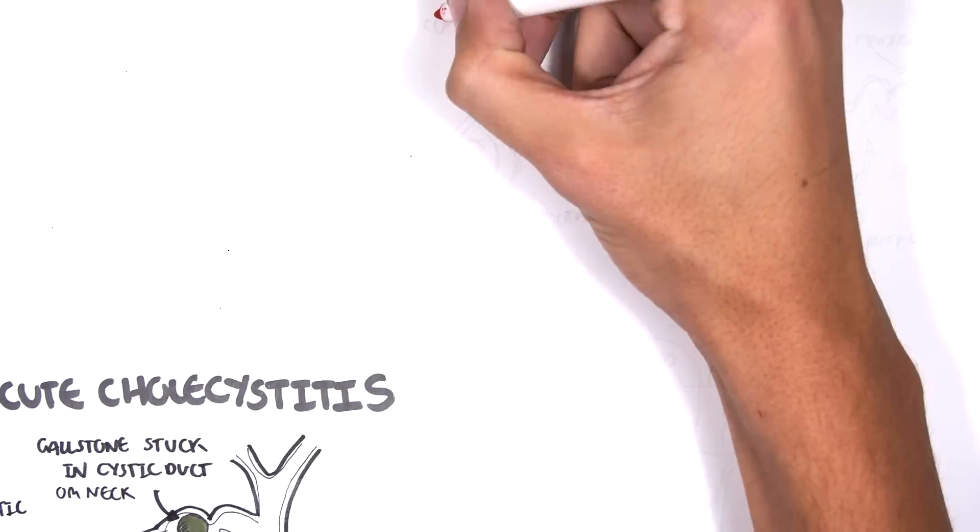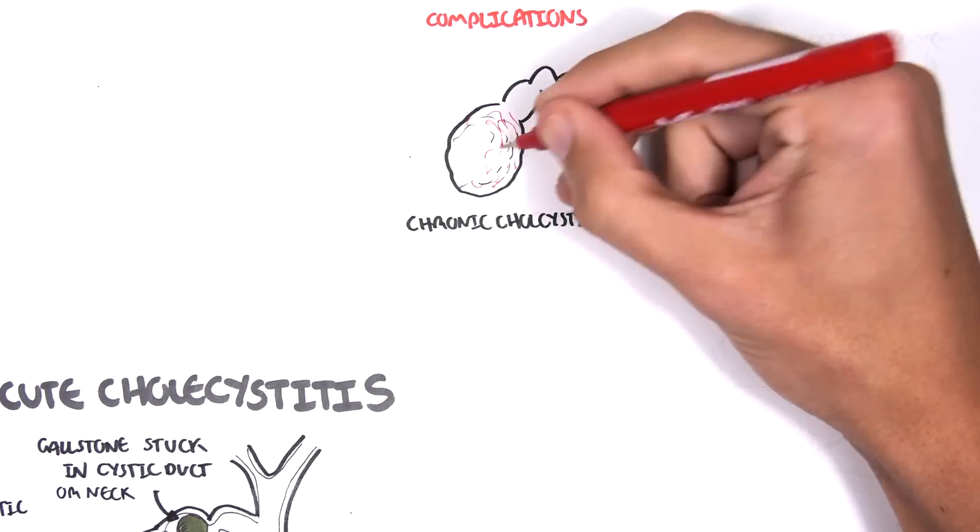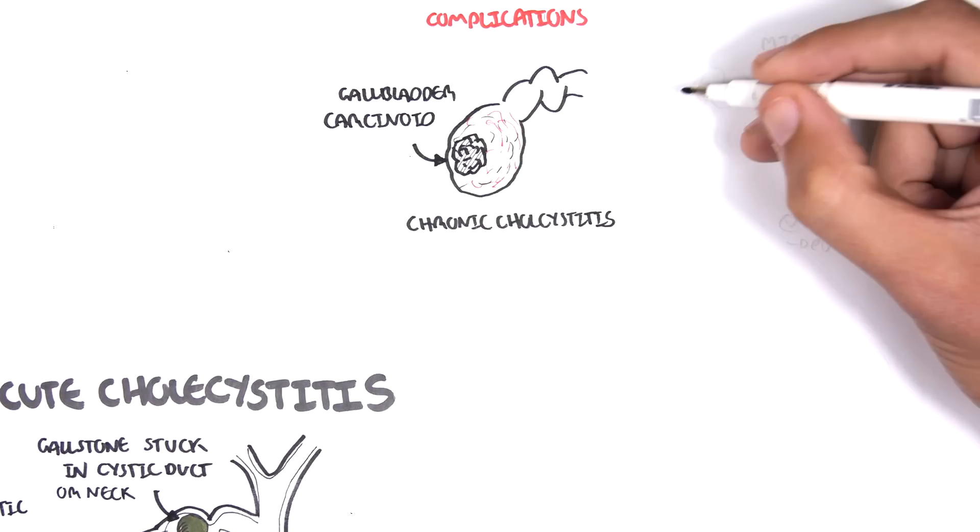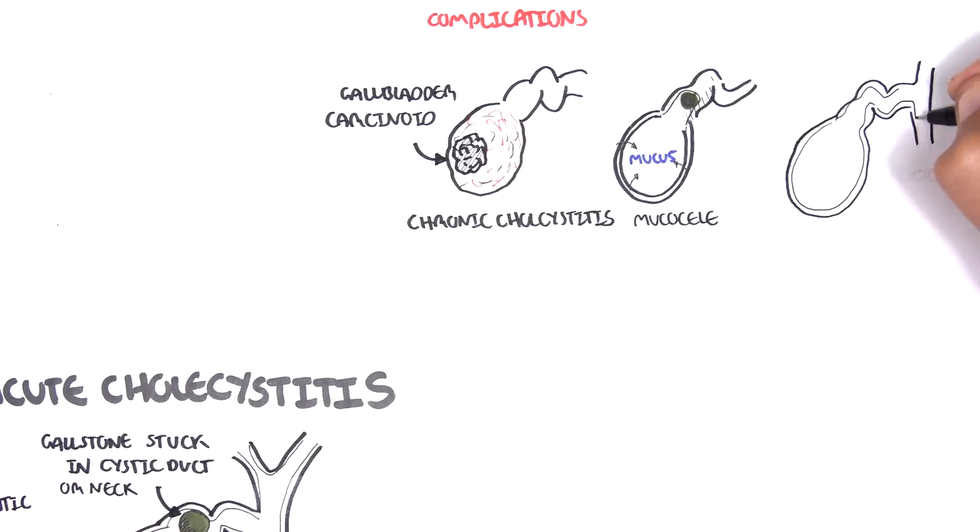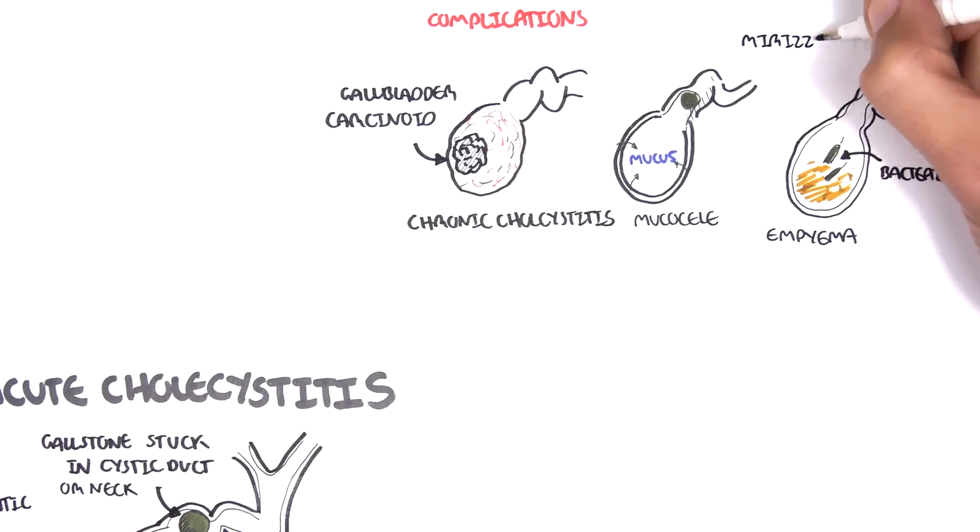Complication of cholecystitis is a tumor of the gallbladder, chronic cholecystitis, mucocele, where mucus is secreted into the gallbladder, empyema, which is pus in the gallbladder thanks to infection by the bacteria.